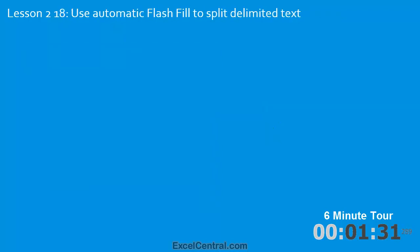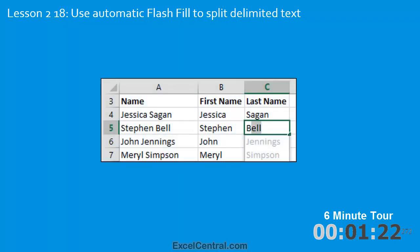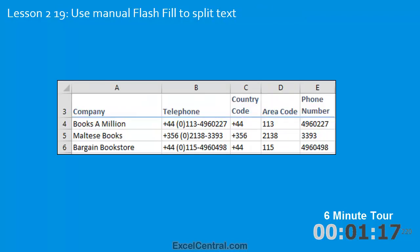In the eighteenth lesson you'll use Flash Fill, one of the most important and hugely powerful new features in Excel 2013. You'll take a full name and split it into a first name and last name. Building on this in lesson 19, you'll split a telephone number into its constituent parts with just a few mouse clicks — something that would have been very difficult to do in earlier versions of Excel.